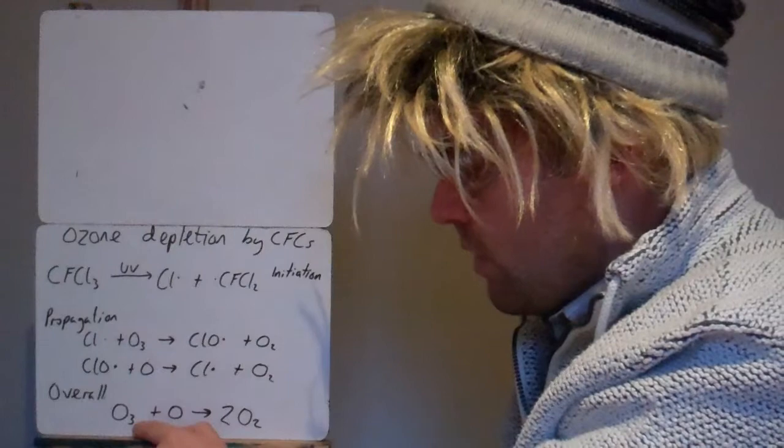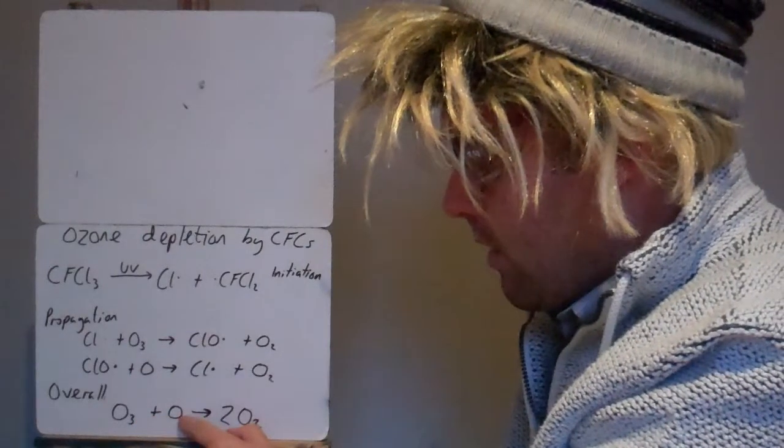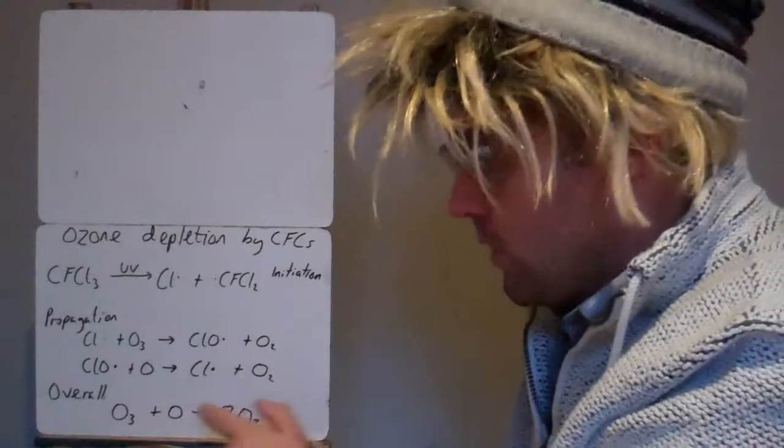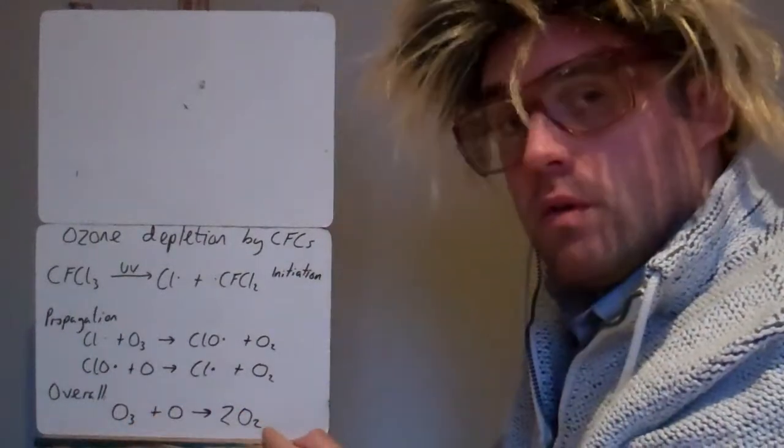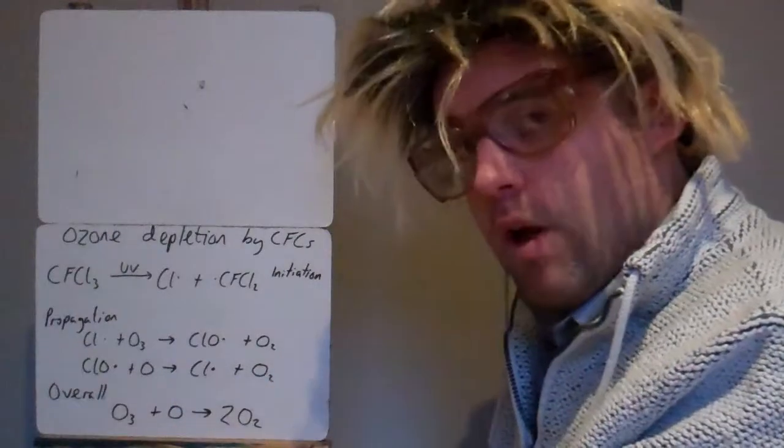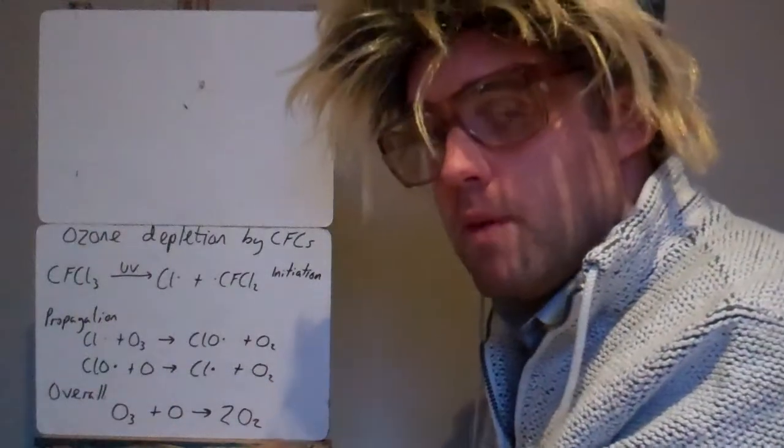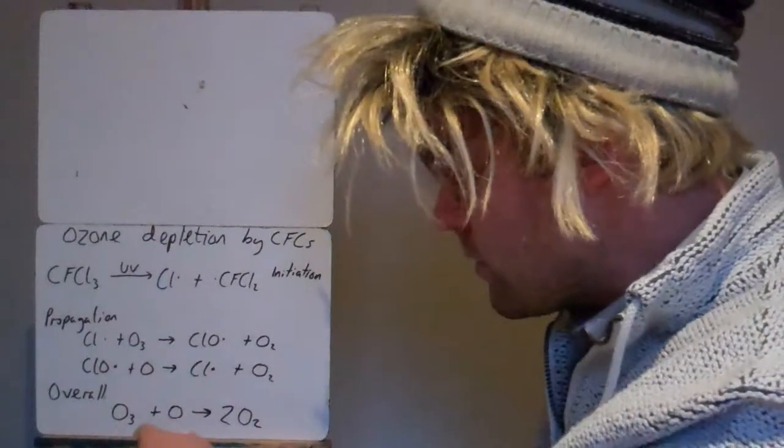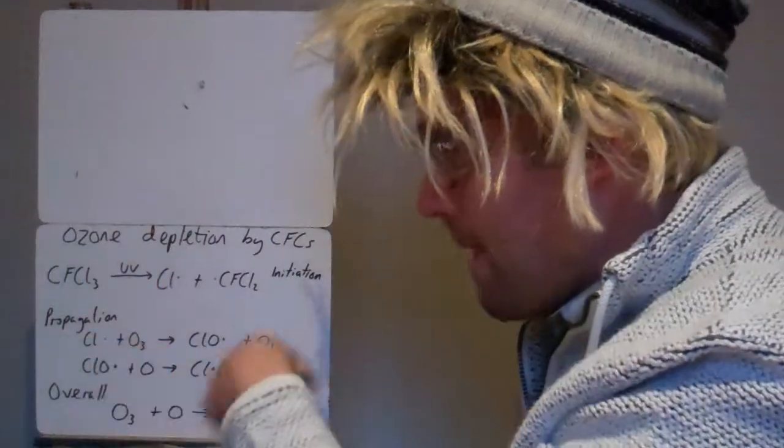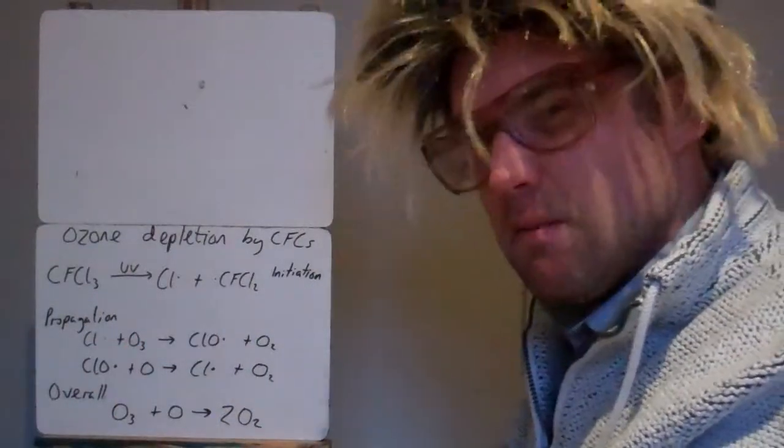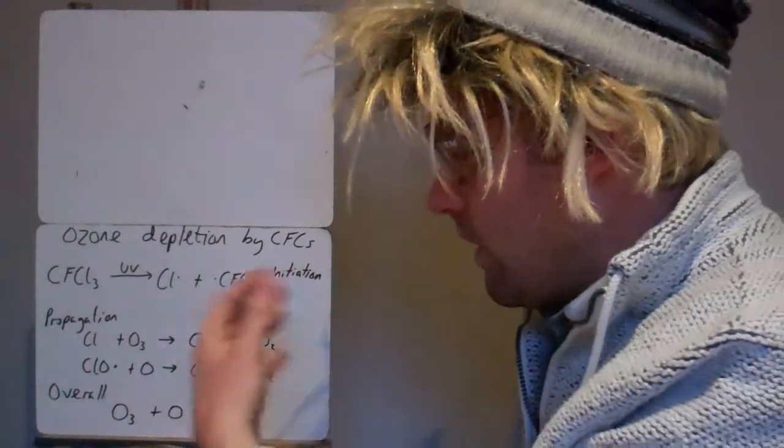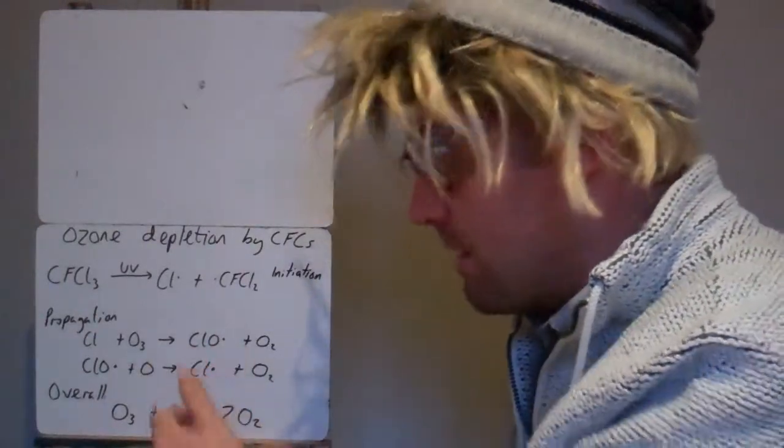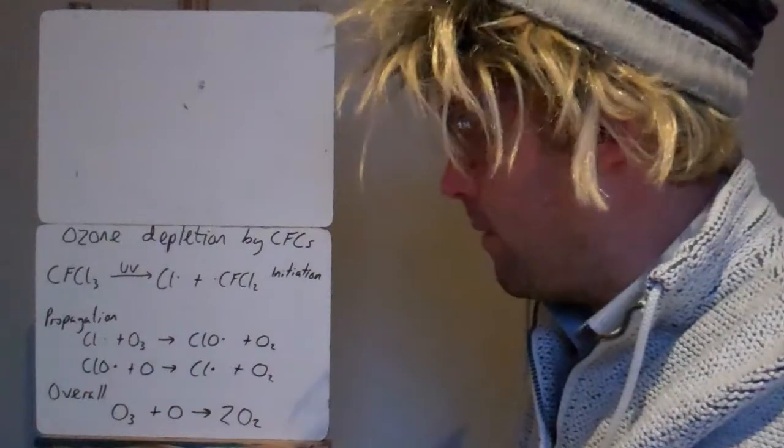So overall we've got ozone, O3, reacting with an oxygen atom to form two molecules of O2. So overall we're breaking down ozone. And without ozone, we can't filter out that UV-B area of the ultraviolet rays. So this is a man-made situation because CFCs are man-made and that's changing our equilibrium. It's making it go in reverse. We're reducing the amount of ozone we have and that's a big problem.